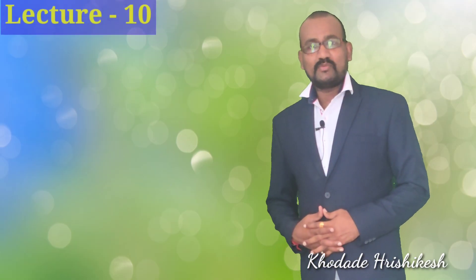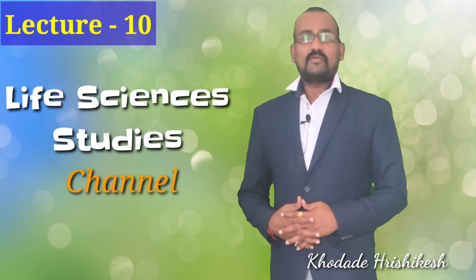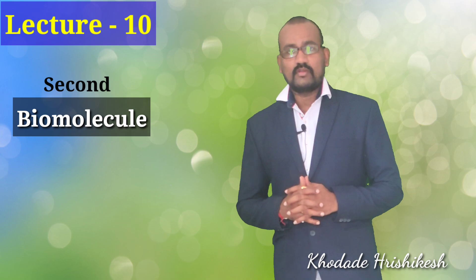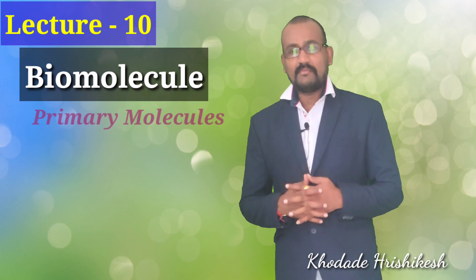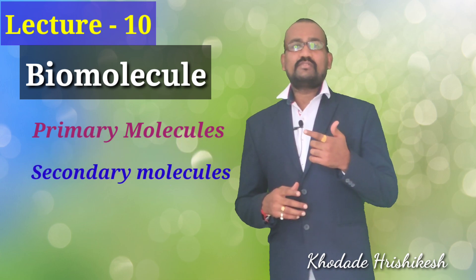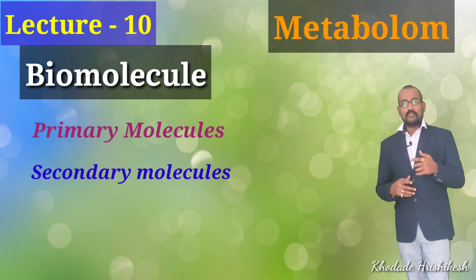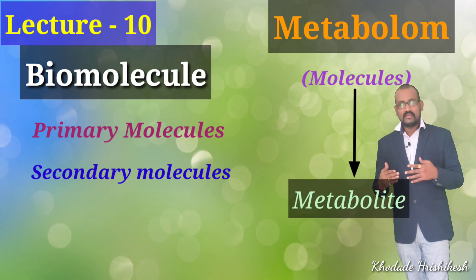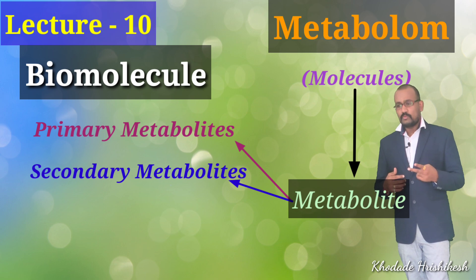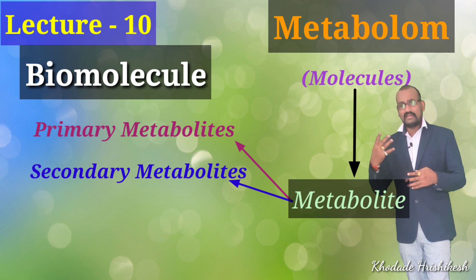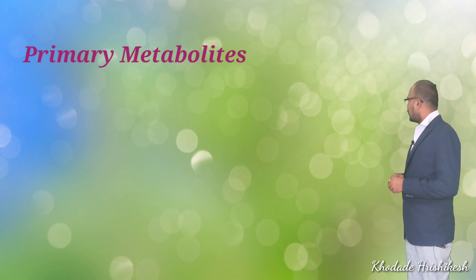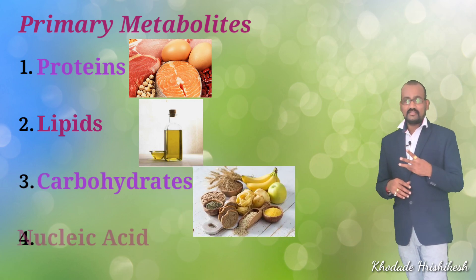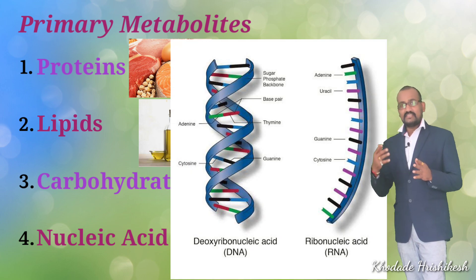Hello dear friends, welcome to the 10th lecture in the Life Sciences Studies channel. I am Professor Rishikesh in botany. Today we are going to discuss the second biomolecule. Biomolecule terminology includes primary and secondary molecules, studied under the concept of metabolomics. These molecules are known as metabolites — primary metabolites and secondary metabolites. The primary metabolites are of four types: proteins, lipids, carbohydrates, and nucleic acids, which contain RNA and DNA.